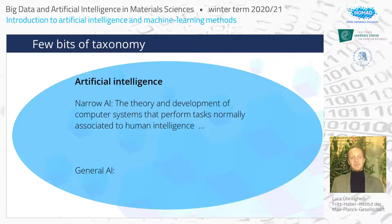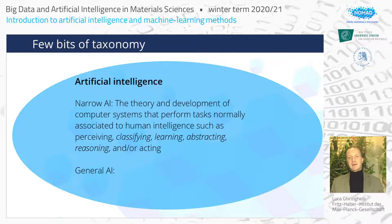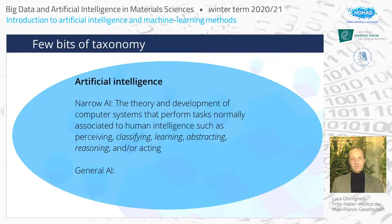We can define narrow artificial intelligence as the theory and development of computer systems — where 'systems' refers to both hardware and software, including algorithms and specific architectures — that perform tasks normally associated with human intelligence. What is human intelligence? Let's define these tasks: perceiving, classifying, learning, abstracting, reasoning, and acting. The tasks in italic are more relevant for physics and material science in general, while perceiving and acting are more related to robotics or self-driving cars — though you can stretch these concepts to data acquisition and reaction to new data.